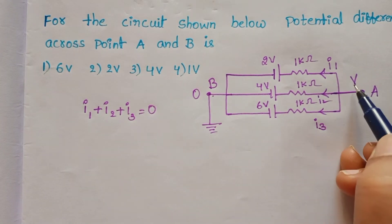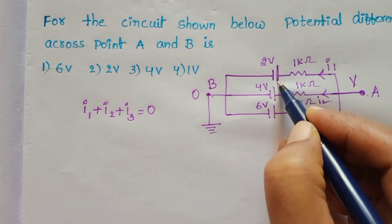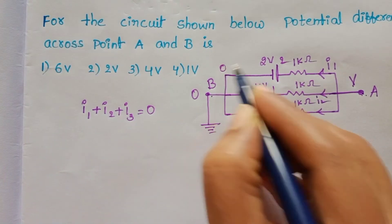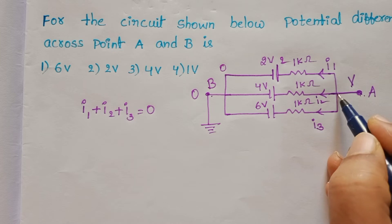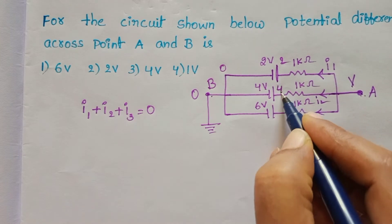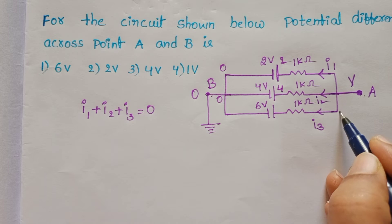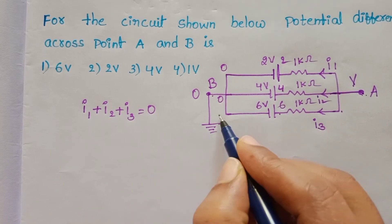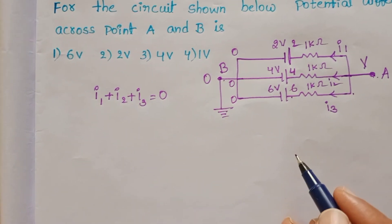At this point the potential is V, here 2 volts, and at this point 0 volts. Here V, 4 volts and 0 volts. And here V volts, at this point 6 volts, and here 0 volts.